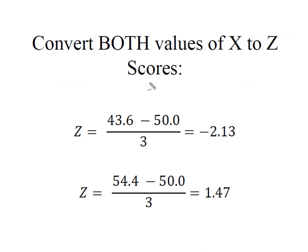Just like you've done in the past, we're going to now have to convert both of these values of X to Z scores. Begin with my 43.6 minus the mean divided by standard deviation gives me a Z of negative 2.13. Remember you expect to see this Z score being negative because 43.6 is below the mean. My other value of X was 54.4 minus the mean divided by the standard deviation gives me a Z score of 1.47. We expected this one to be positive because the 54.4 falls above the mean.